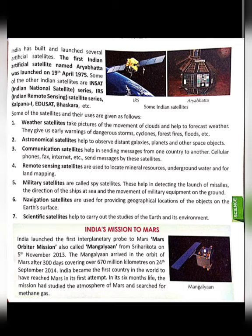Satellites have different uses. Weather satellites take pictures of the movement of clouds and help to forecast weather. They give early warnings of dangerous storms, cyclones, or forest fires. Astronomical satellites help to observe distant galaxies, planets, and other space objects. The Mangalyaan was an astronomical satellite.